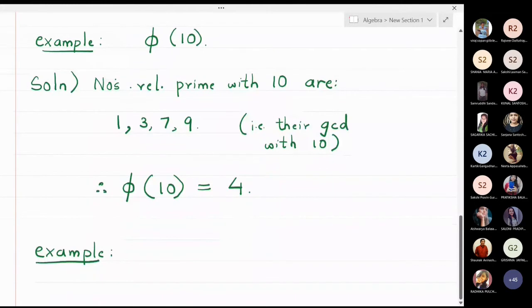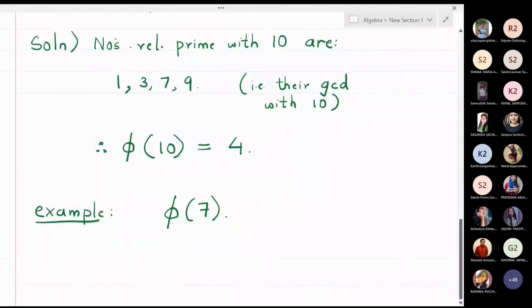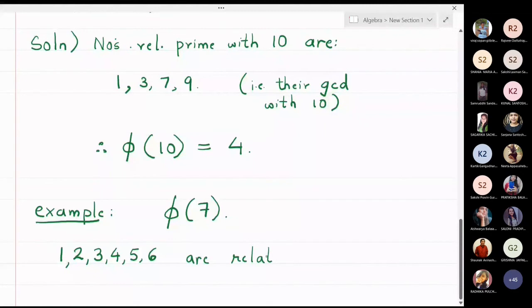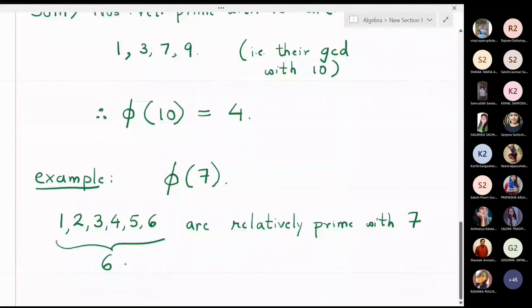Let us find phi of 7. The positive numbers less than 7 — that is, 1, 2, 3, 4, 5, and 6 — all have GCD 1 with 7. They are all relatively prime with 7 because there is no common divisor between these numbers and 7 except 1. We got 6 such members.